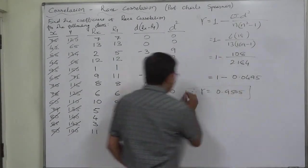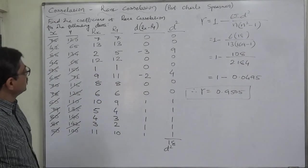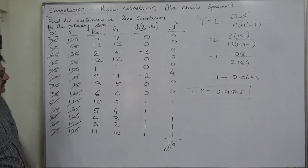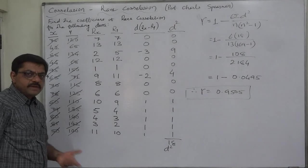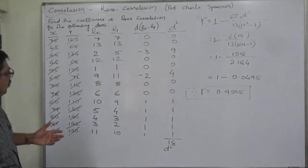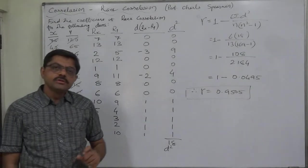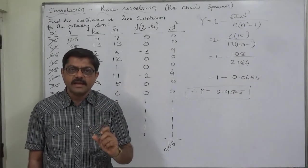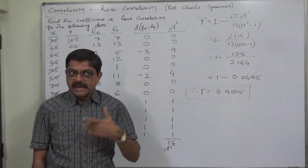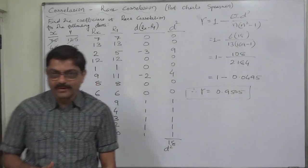A very high degree correlation, rank correlation is there between the two given phenomenon. So, in this way, the ranks are assigned. In this case, we discussed a very simple case where there is no repetition of the values there. Now, in the next lecture, we are going to discuss a case having repetition of the values. In case of repetition of the values, how to assign the ranks. That is it. Thank you very much.